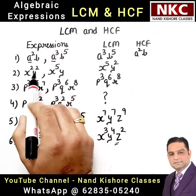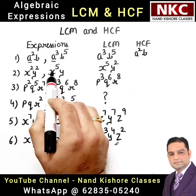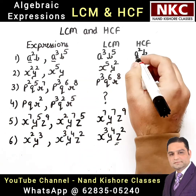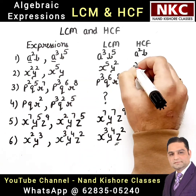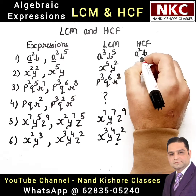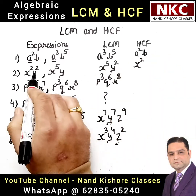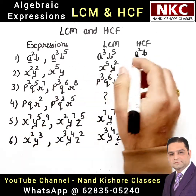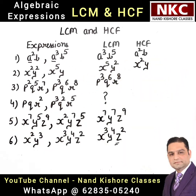From the second part: X square and X power 5 — you take only X square. From Y square and Y — we take Y.